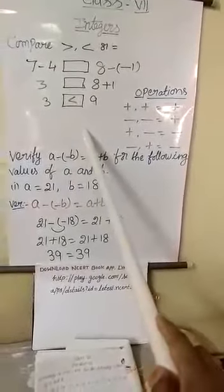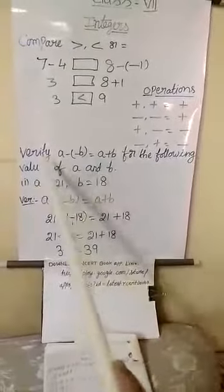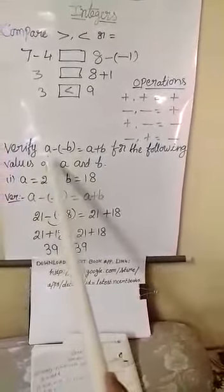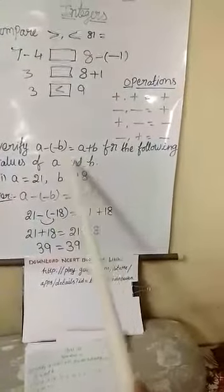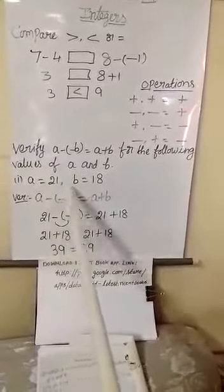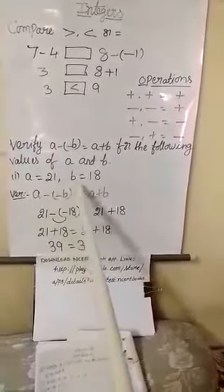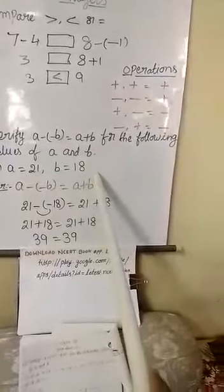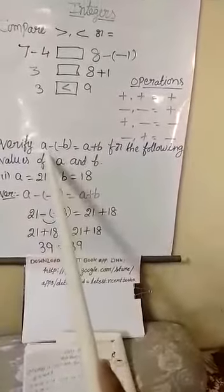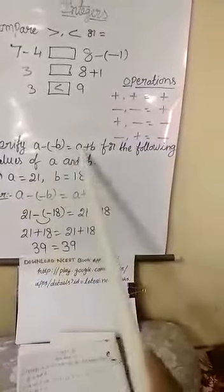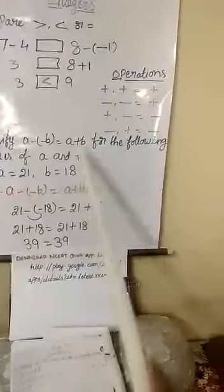In this class we learned about how to verify. The equation must be equal. Then it will be right. Otherwise it is not the equation. By putting the values A and B. Already had given the values. A equals to 21, B equals to 18. Equation is A minus minus B equal to A plus B.